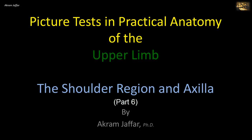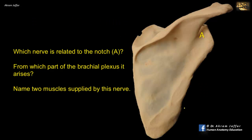Now I will deal with the shoulder region and axilla. Which nerve is related to the notch A? Notch A is called the spinoglenoid notch because it is a notch located between the spine of the scapula and the glenoid cavity, hence the name spinoglenoid notch.